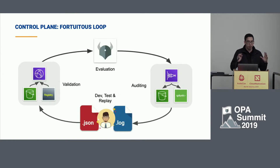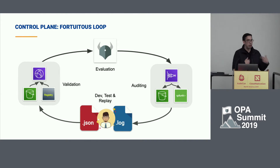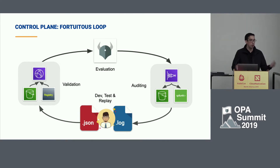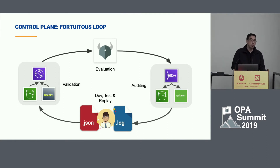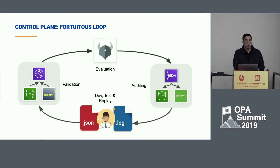With this, we get a nice feedback loop: a developer develops their policy bundles, deploys them, they get validated on our distribution plane and distributed to the OPA agents in production or development. The decision logs come back into our logging pipeline, which the developer can grab for their individual services to do things like replays — modifying their policies locally, grabbing the logs, and seeing exactly how that would change and affect their service.